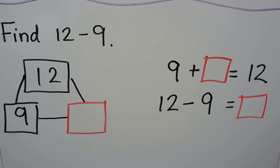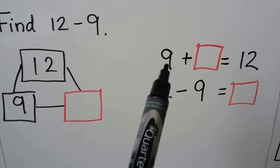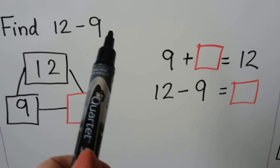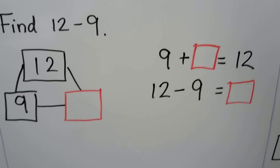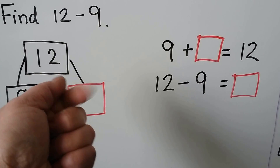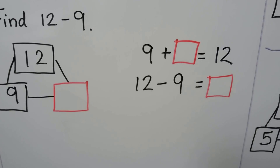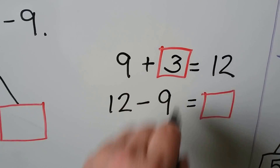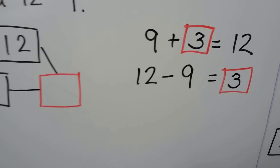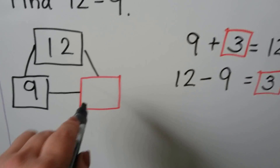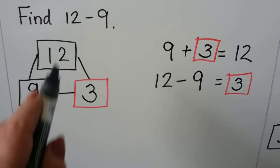Find 12 minus 9. We have 12 minus 9 and we're going to use an addition sentence to help us find the difference. 9 plus some unknown number is equal to 12. We can count on until we get to 12: 9, 10, 11, 12. That's 3. So 9 plus 3 is equal to 12, which means 12 minus 9 is equal to 3. We know our unknown number for our triangle of cubes — these two numbers added together will equal 12.